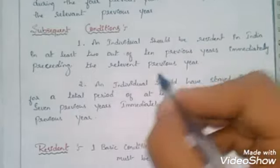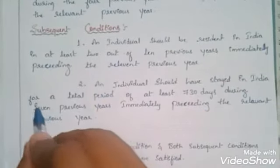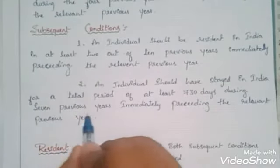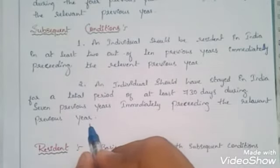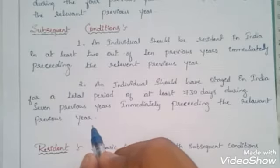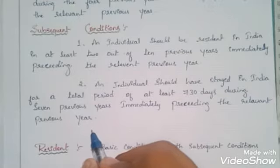The second subsequent condition is that an individual should have stayed in India for a total period of at least 730 days during the seven previous years immediately preceding the relevant previous year. A person can stay for 730 days during those seven years irregularly — he does not need to stay continuously, but must accumulate a minimum of 730 days.